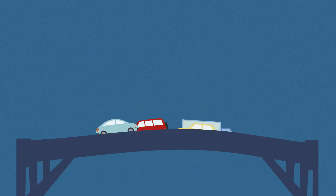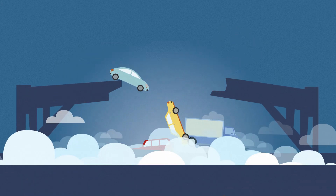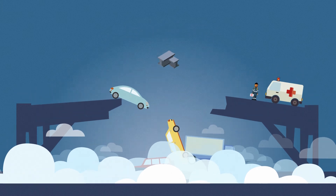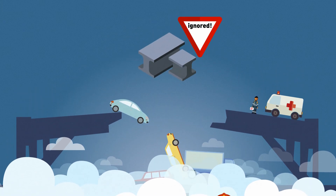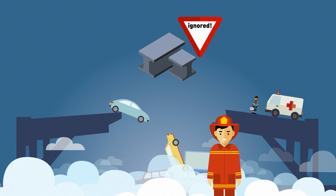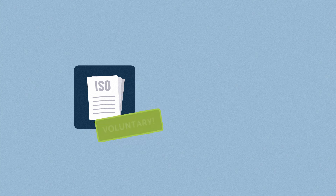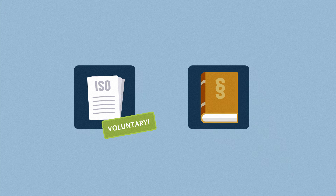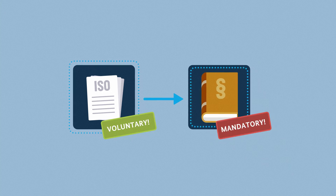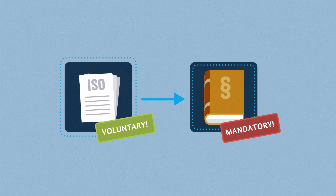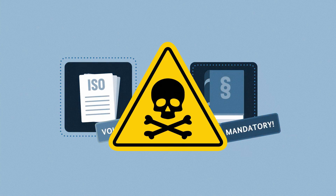The same applies to the events in Italy — the bridge collapsed because material testing was inadequate. That has to do with standards too, with technical regulations to be more precise. Standards per se are voluntary and not legally binding. However, once a law refers to a standard in its text, this standard becomes mandatory and is called a technical regulation. This is usually done in cases that pose particularly high safety risks.